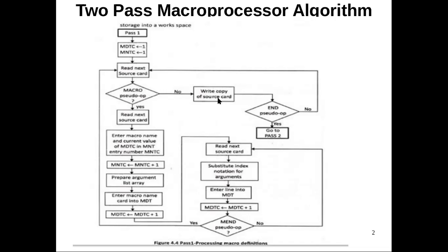After copying that non-macro line, we check whether that line contains the pseudo opcode END or not. If it is not END, we read the next line from the source program. If that pseudo opcode is END, which means it is the end of your source program, then we go to pass two. So in summary: read a line from the source program — if it is not a macro definition, store a copy into secondary storage and check whether that line's pseudo opcode is END. If it is END, finish pass one; otherwise read the next line.